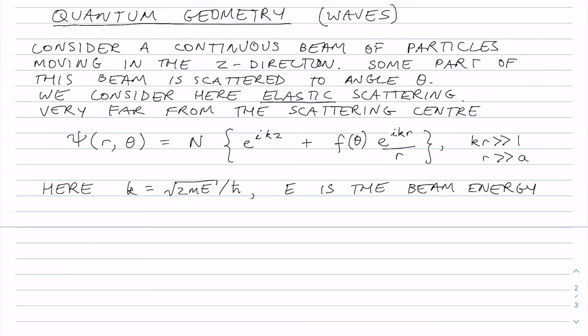So k is the wave number. Remember, momentum equals h bar k. And E is the energy of the beam. And f of theta is now called the scattering amplitude.